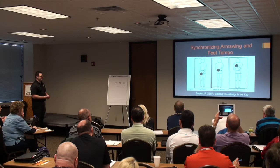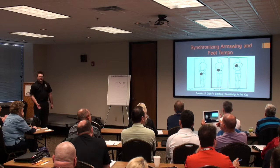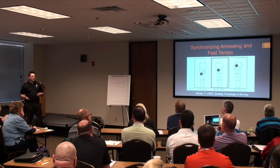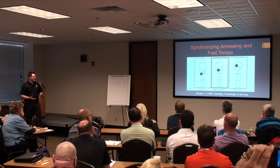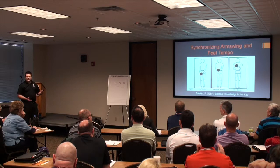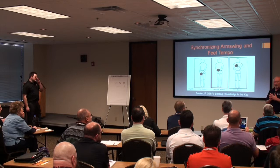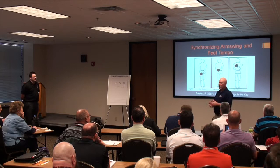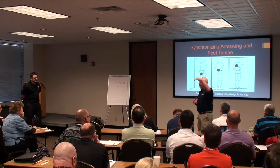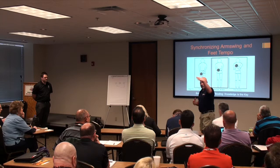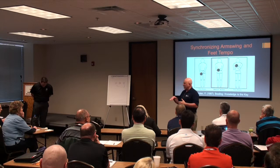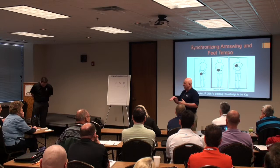If you look at Fred Borden's book 'Bowling Knowledge is the Key' from 1987, there's a figure showing a fast bowler holding the ball low and a slow bowler holding it high. This is to try to synchronize the arm swing and foot tempo, not to change ball speed — just to make timing better. If you have a fast bowler, you want to make sure the arm swing is consistent with the footwork. But the question is: if you hold it higher to throw faster, is that going to make you slow down your feet to stay in time? Or if you hold it lower to throw slower, is that going to make your feet go faster? So it created some interesting questions.